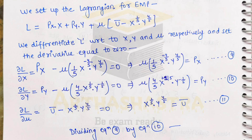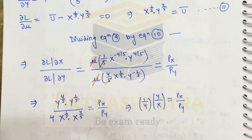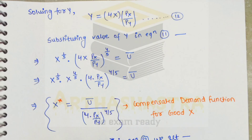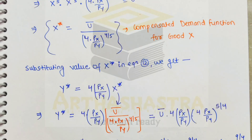Dividing equation 9 by equation 10, we derive the same equilibrium condition as before — equation 12 matches equation 6 — confirming that the consumer equilibrium condition is the same whether we solve the utility maximization problem or the expenditure minimization problem. Substituting this equilibrium condition into equation 11, we get x^(1/5)·(4x·px/py)^(4/5) = ū. Rearranging, the compensated demand function for good x is: x* = ū / [4·(px/py)]^(4/5).